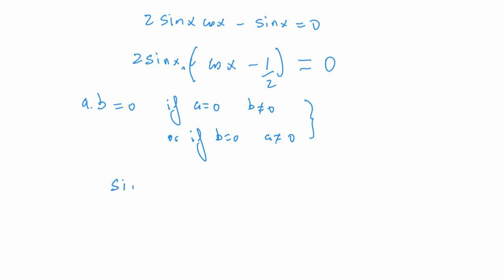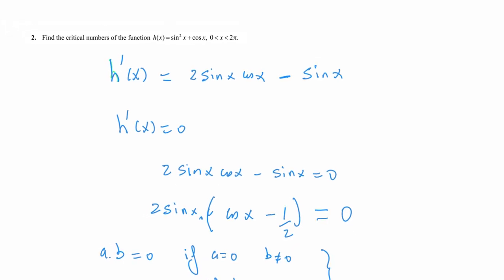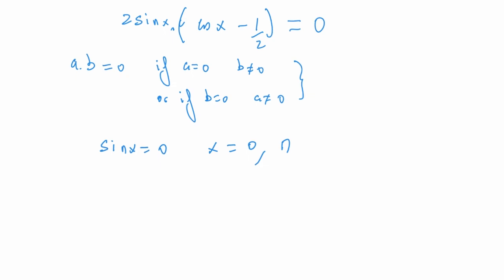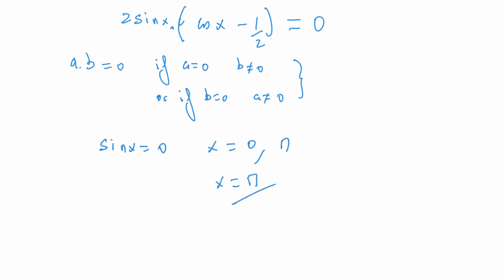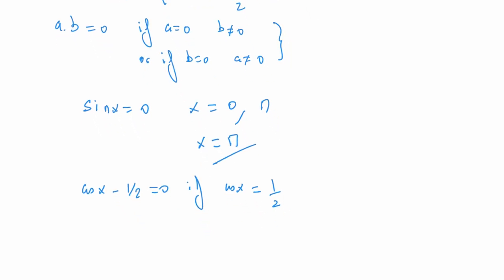Sine of x equals zero when x equals zero or pi. Since zero is not included in the interval, the only point from this factor is x equals pi. For the other factor, cosine of x minus one half equals zero means cosine of x equals one half, which gives x equals pi divided by 3.